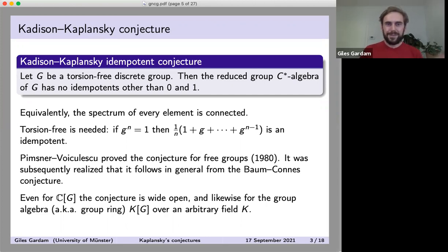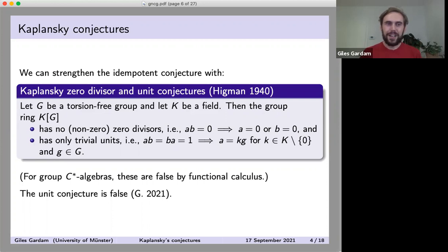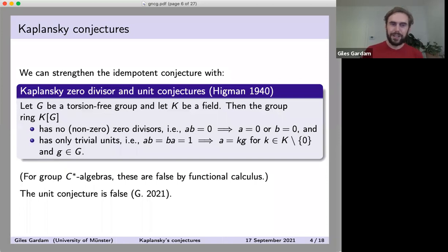This conjecture is wide open — it's a hard question. Of course, something we do when we have hard questions is ask even harder questions, and there are some conjectures that strengthen this, commonly attributed to Kaplansky. One refers to the Kadison-Kaplansky idempotent conjecture, or, if we only care about group algebras, the Kaplansky idempotent conjecture. There are two other conjectures carrying Kaplansky's name: the zero divisor and the unit conjecture. Both were actually formulated by Higman in his 1940 thesis, but it was Kaplansky who popularized the questions and the study of group rings.